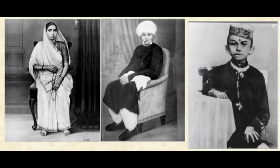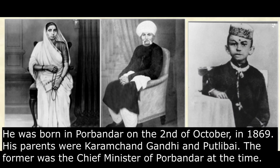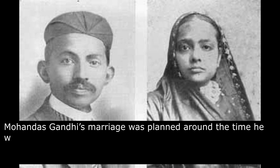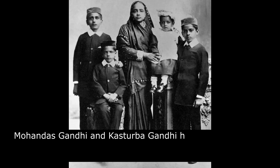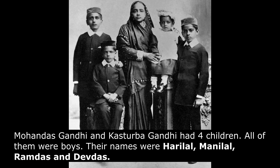The real name of Mahatma Gandhi is Mohandas Karam Chand Gandhi. He was born in Porbandar on 2nd October 1869. His parents were Karam Chand Gandhi and Putlibai. His marriage was planned around the time he was 13 years old. He was married to Kastur Kapadia, who later changed her name to Kasturba Gandhi. They had 4 children, all boys — Harilal, Manilal, Ramdas, and Devdas.